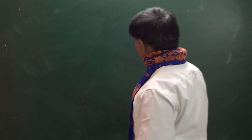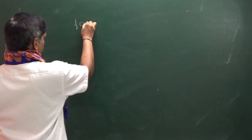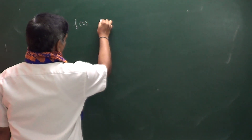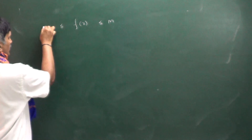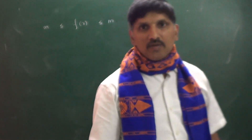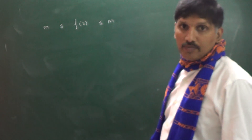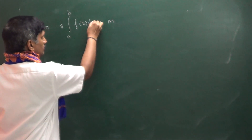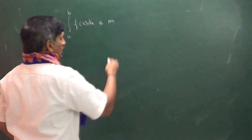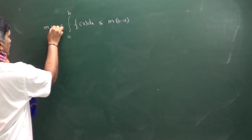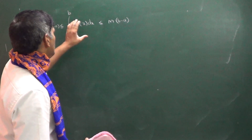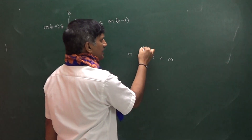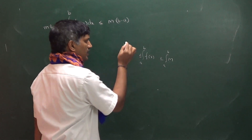Now I will discuss another problem. If f is a continuous function on the open interval (a, b), and its maximum value on that interval is M (capital) and minimum value is m (small), then the integral from a to b of f(x) dx lies between m·(b − a) and M·(b − a). This is because if f(x) lies between m and M, we can apply integration to all sides.